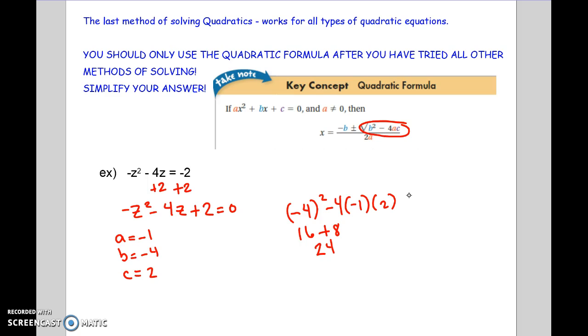So x equals negative b plus or minus the square root of b squared minus 4ac, which I just did here. So 24 all over 2 times a negative 1. So now I have x equals. This becomes a positive 4 plus or minus the square root of 24 over negative 2.